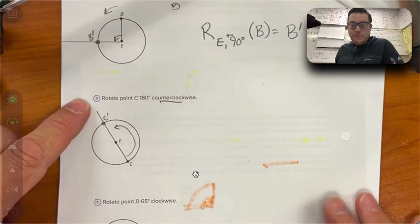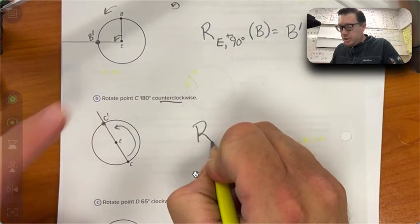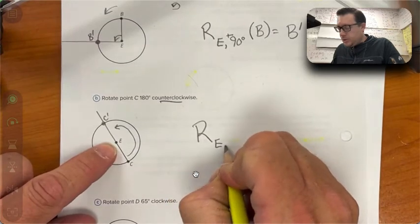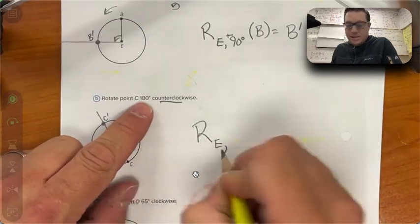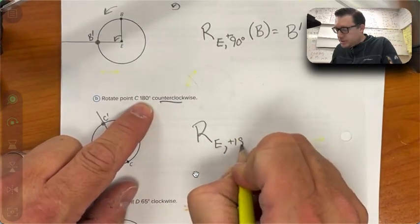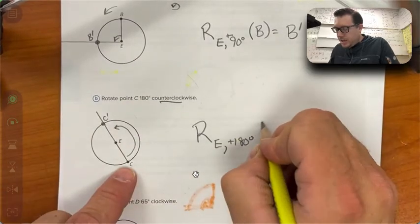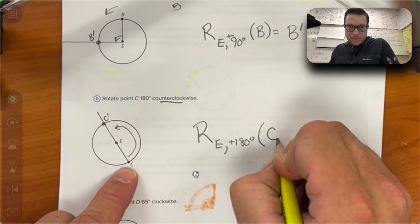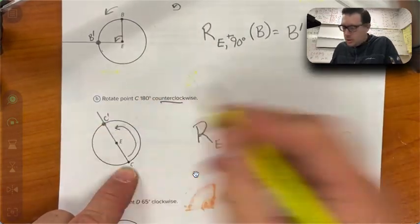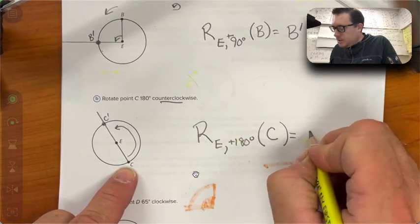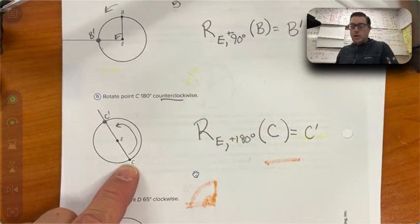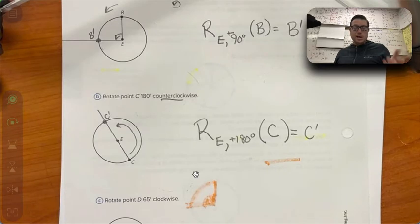This other one does the exact same thing. It's a rotation around point E, by positive 180 degrees. We're rotating point C to C prime.